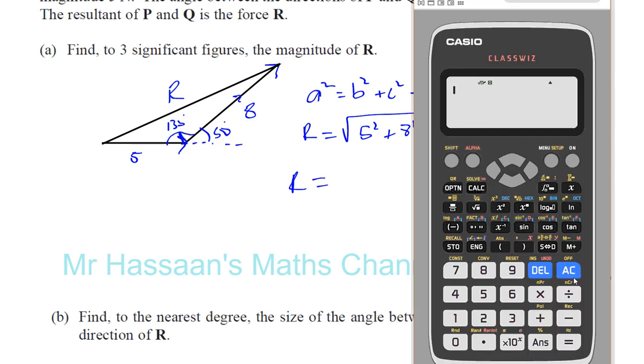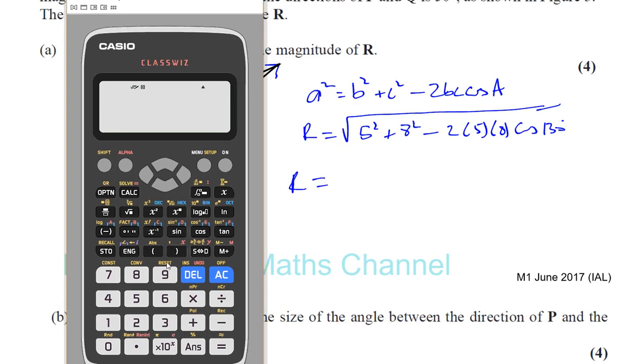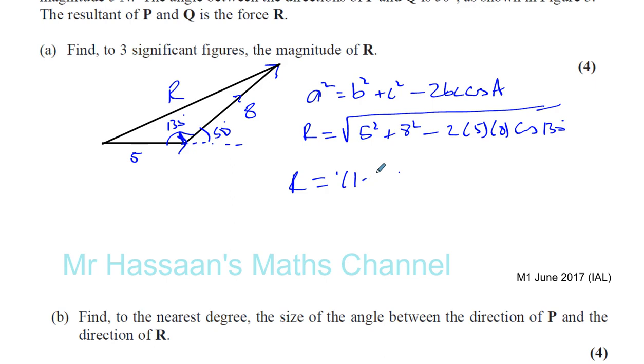So then we can work out what R is. We take out our calculator and we work it out. So we have the square root of 5 squared plus 8 squared minus 2 times 5 times 8 times the cosine of 130. And that gives us our answer 11.850. Therefore R to 3 significant figures is 11.9 newtons.